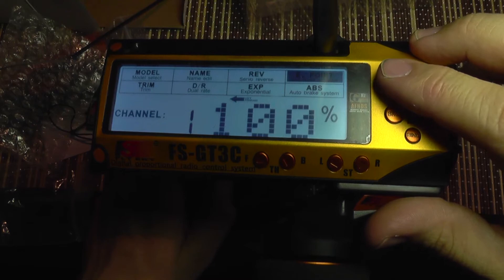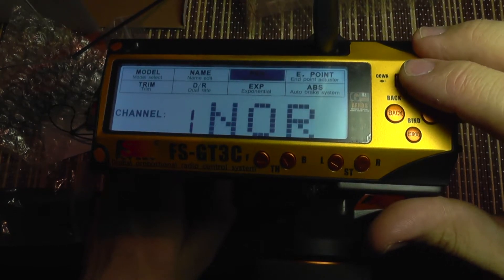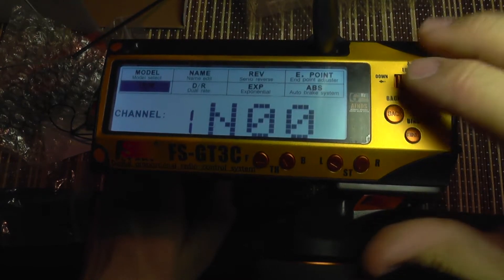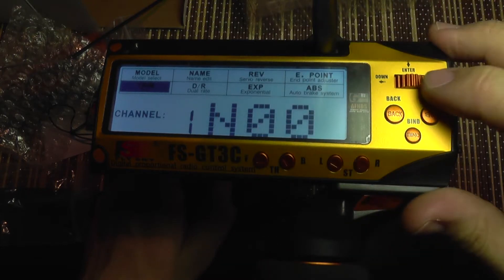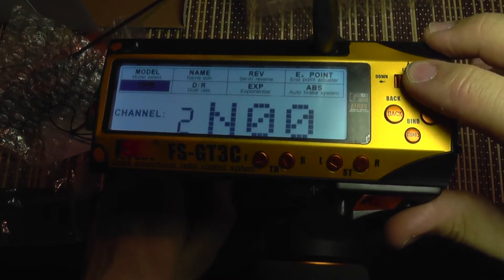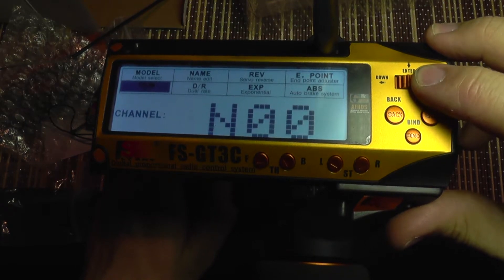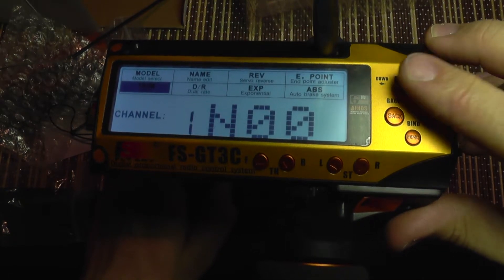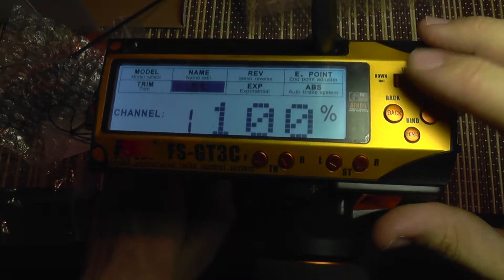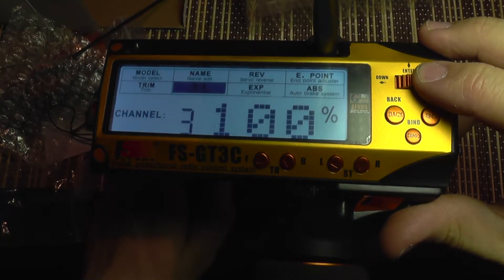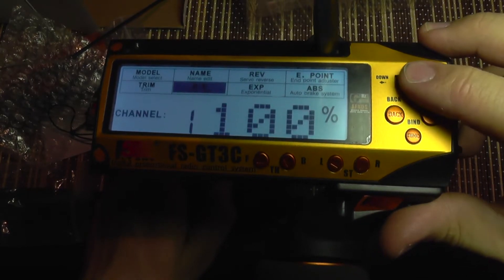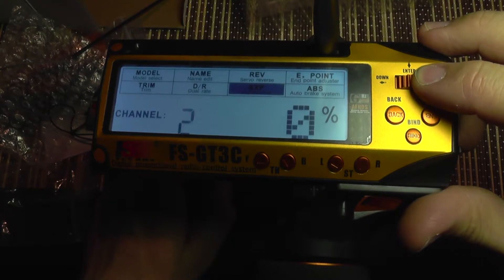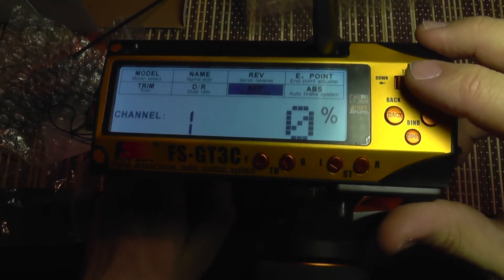Also you have next is the trimming option. And again you have trimming for all the channels. One, two, three. Dual rates. Again for all 3 channels. Exponential. It's available for all the channels.